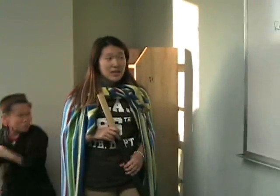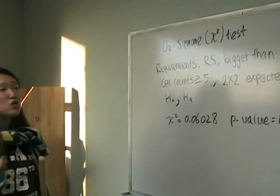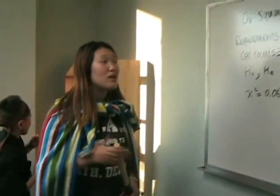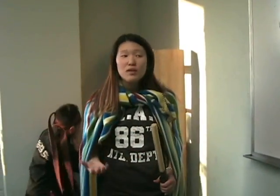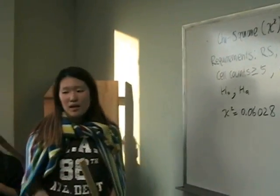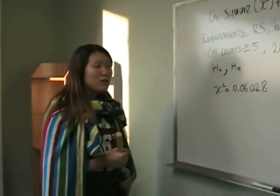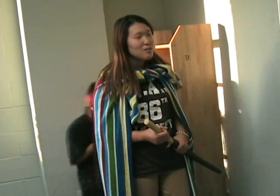The requirements for the Chi-square test are: random sample, and for tables bigger than 2x2 the average expected cell count has to be at least 5, and for a 2x2 table the expected cell count has to be at least 1. In this case, H0 is that there is no relationship between gender and the movie categories, and HA is that there is a relationship between gender and the movie categories. When we did this test, Chi-square turned out to be 0.06028, the p-value turned out to be 0.8061, and the degree of freedom is 1.